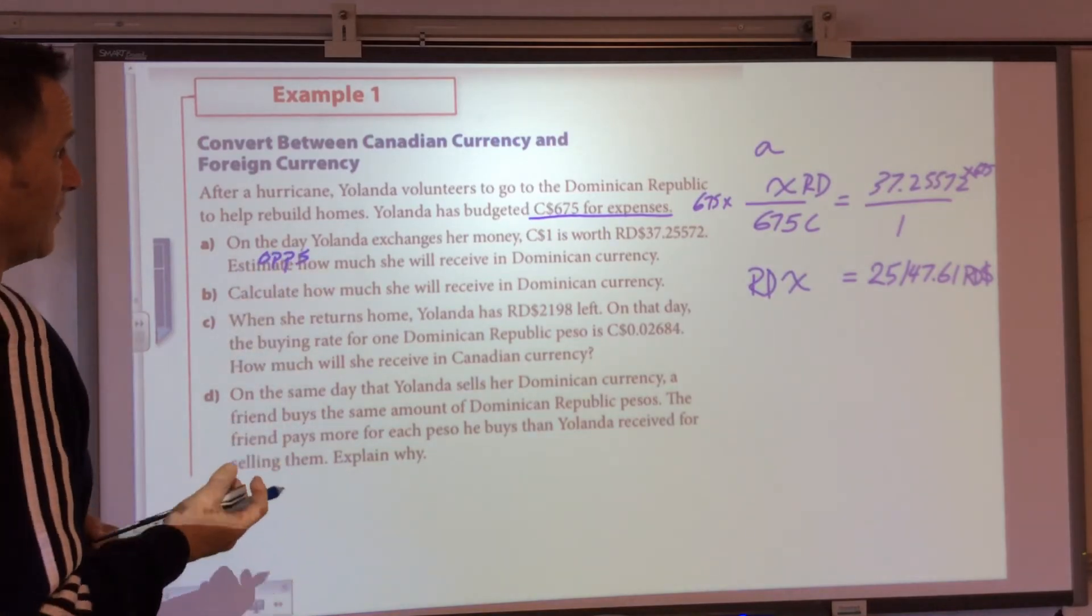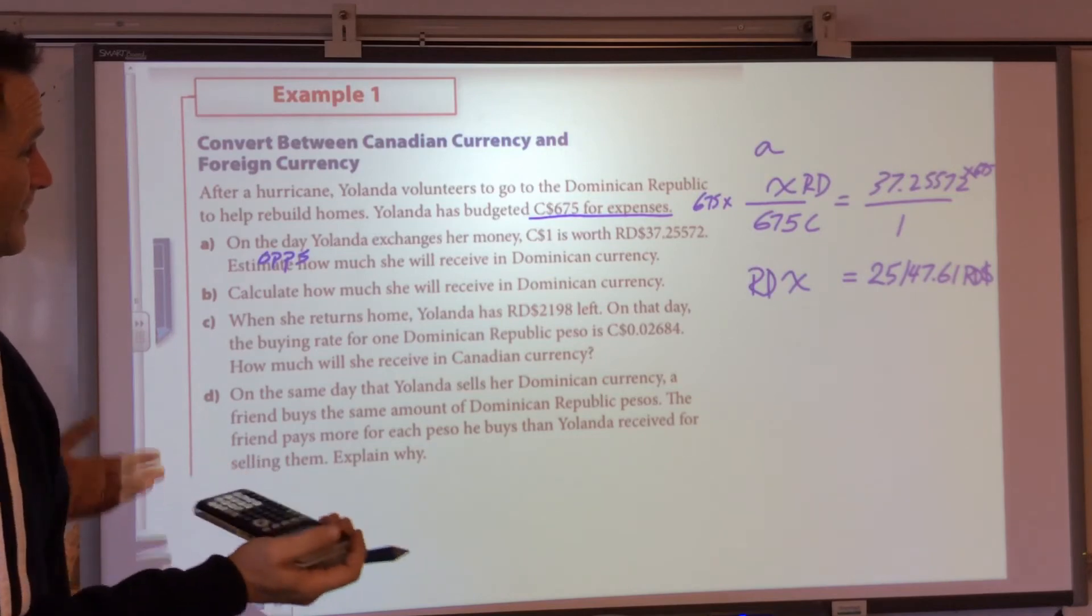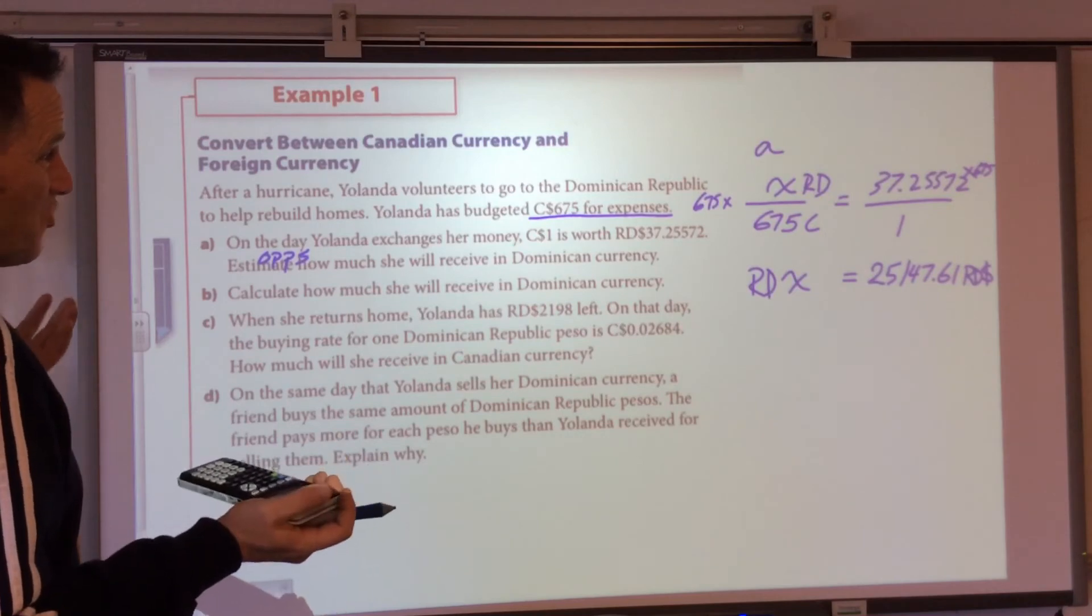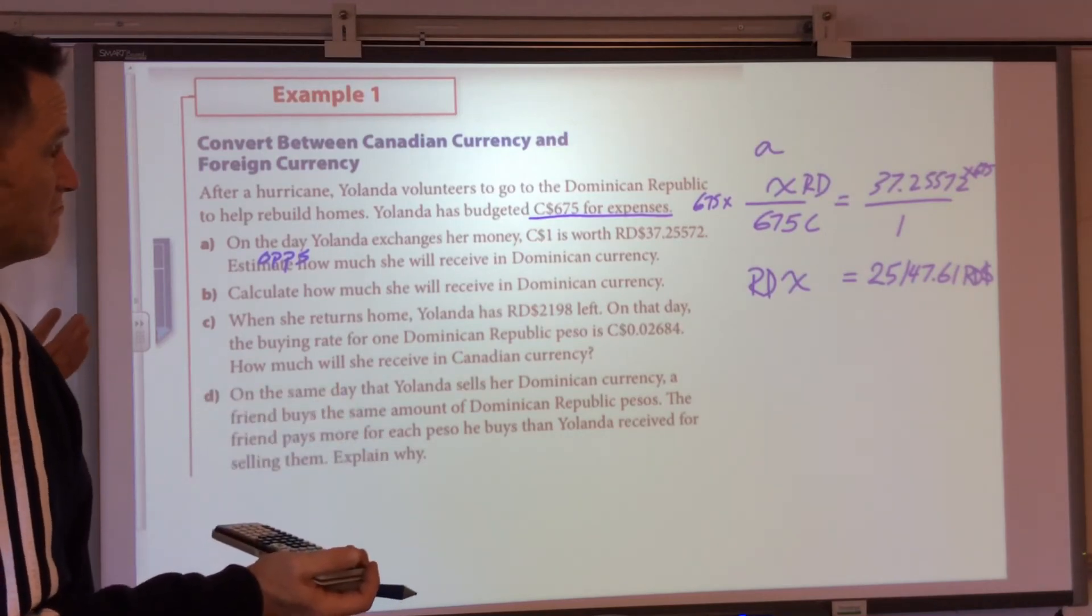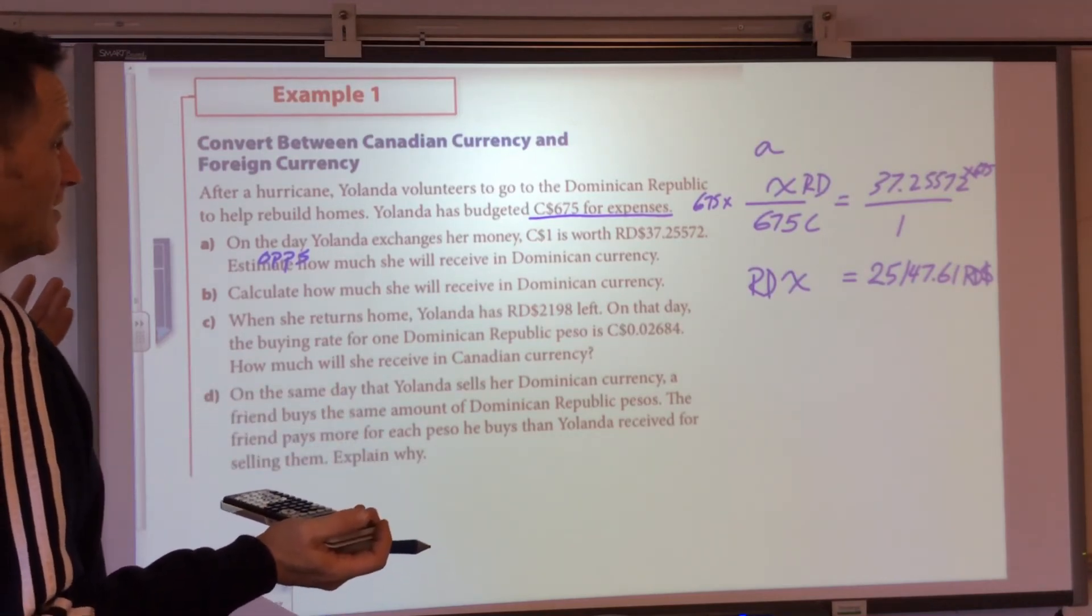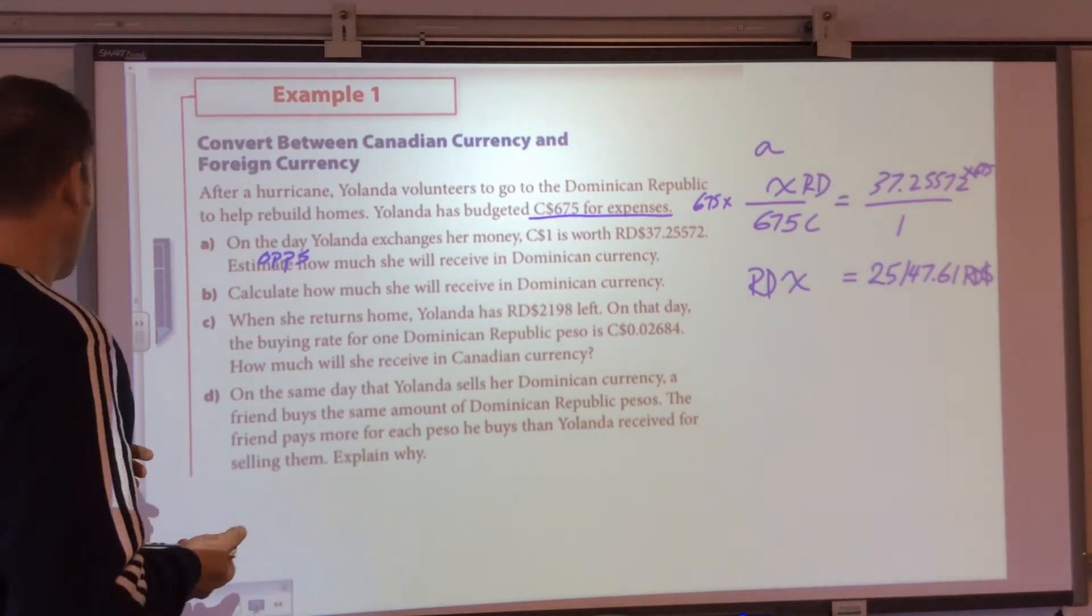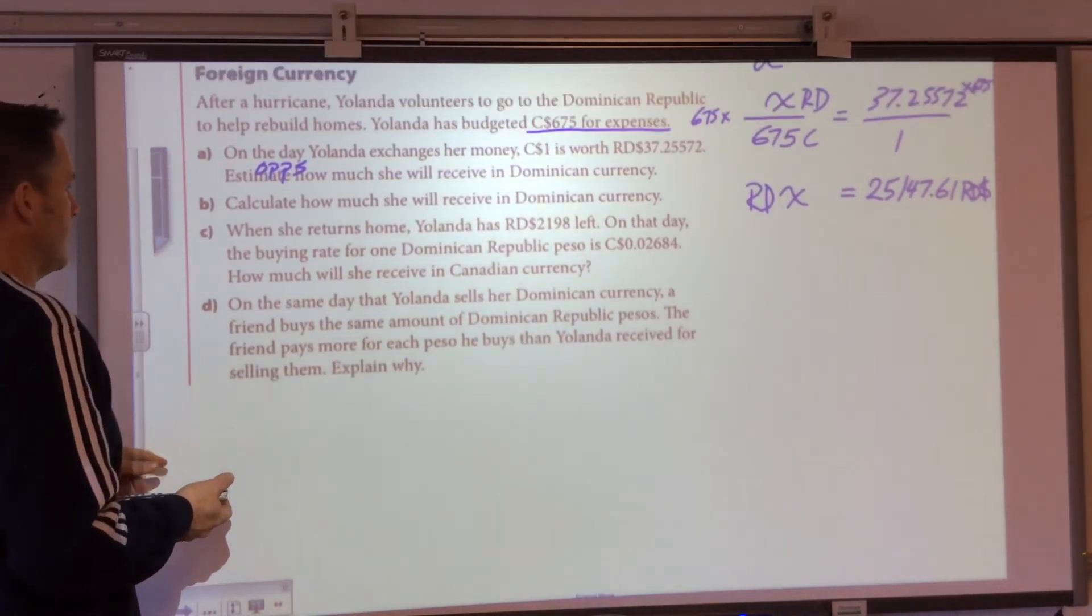Calculate how much she will receive in Dominican. Well, we just did that. Estimate how much she will receive. I didn't do that. If I were to estimate that, what I would do is probably say, okay, well, it's close to 40. So maybe 40 times 650, somewhere in the 2400 range, was a little low if I were to approximate. Everybody's going to have their own strategy.